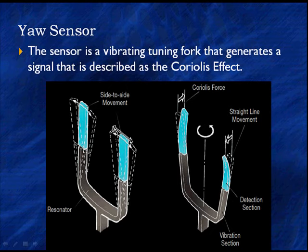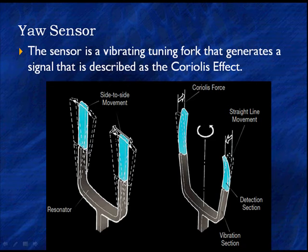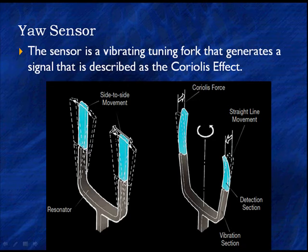Here's the way the yaw rate sensor works. It's a vibrating fork — like a tuning fork — and it generates a signal described as a Coriolis effect. As the vehicle moves left and right, it causes the resonator to vibrate left and right. That causes a torque on the bottom of it, and there's a counter-mechanism on the bottom to offset that torque. The amount of offset required is sensed by the system to indicate the amount of lateral side-to-side movement.